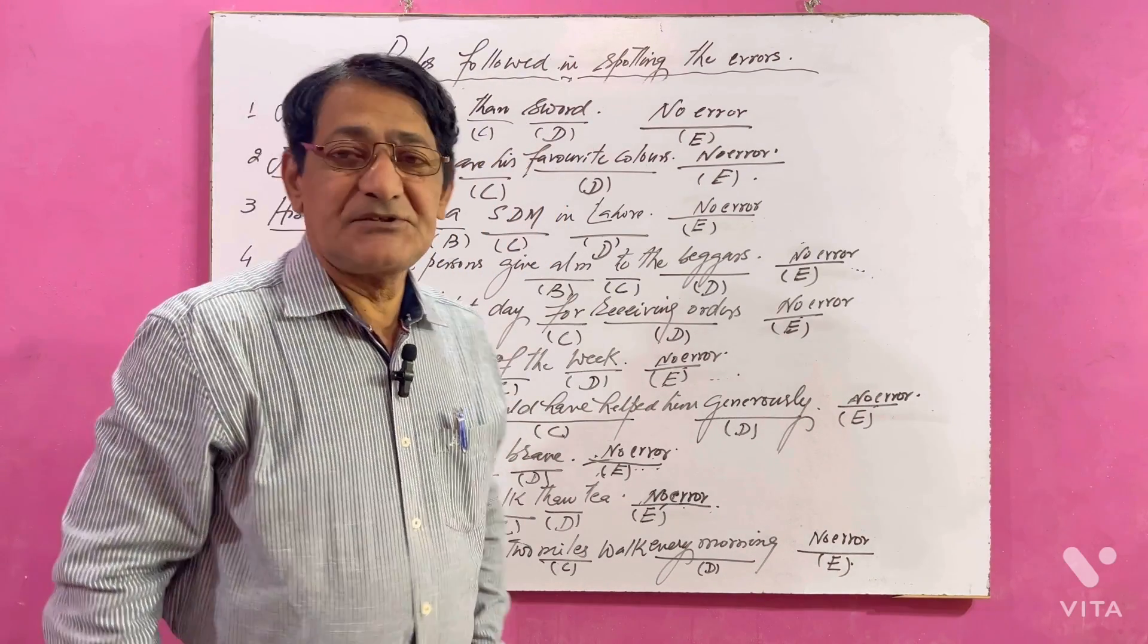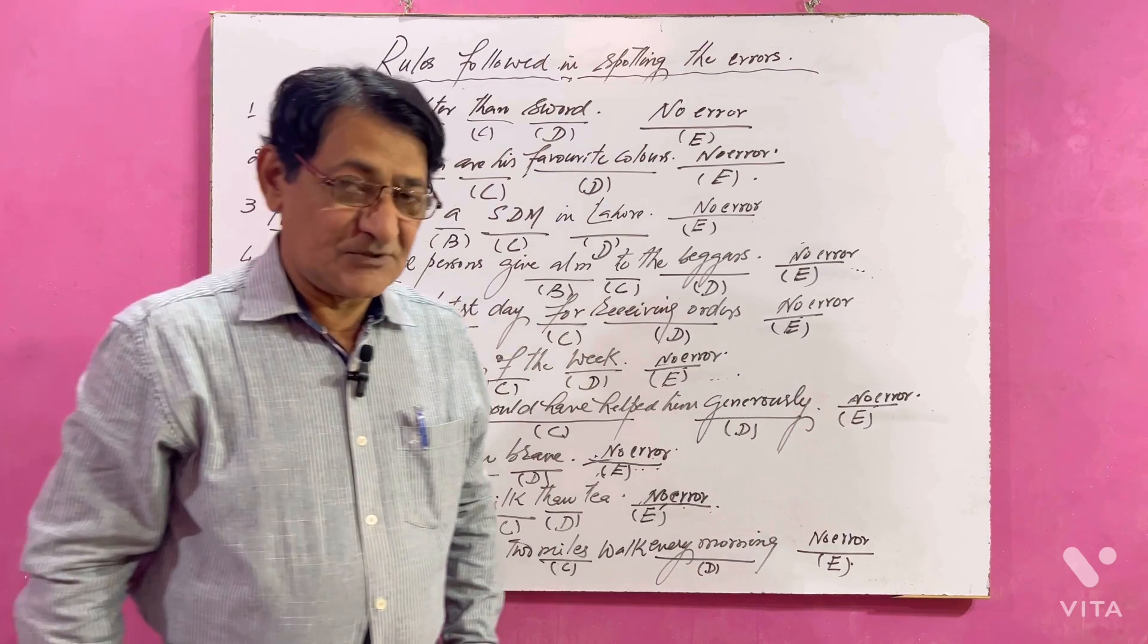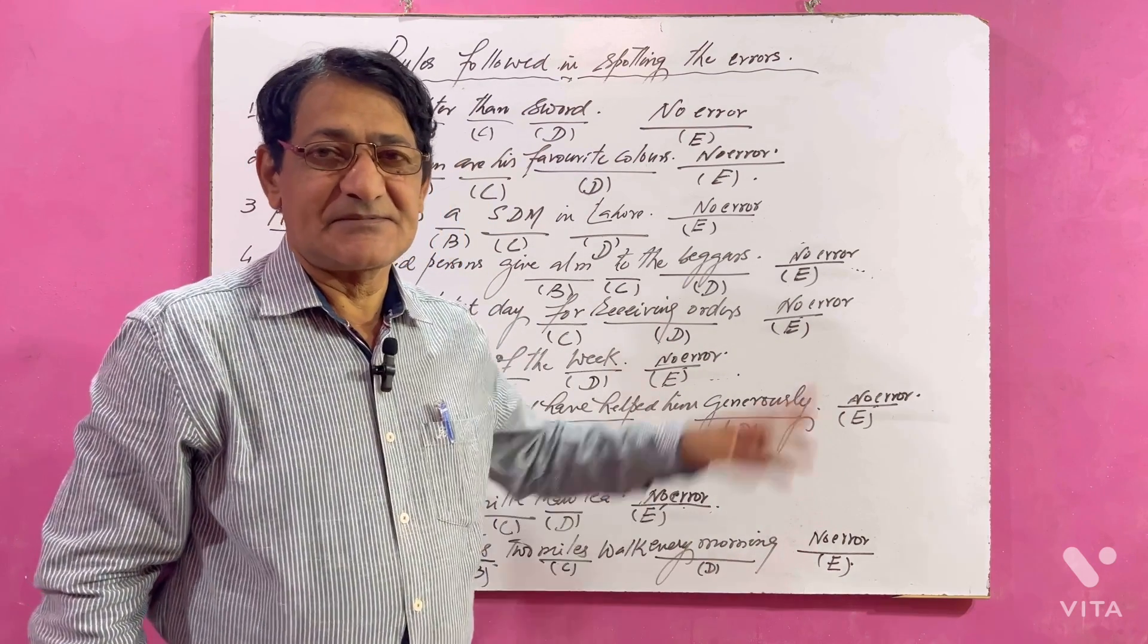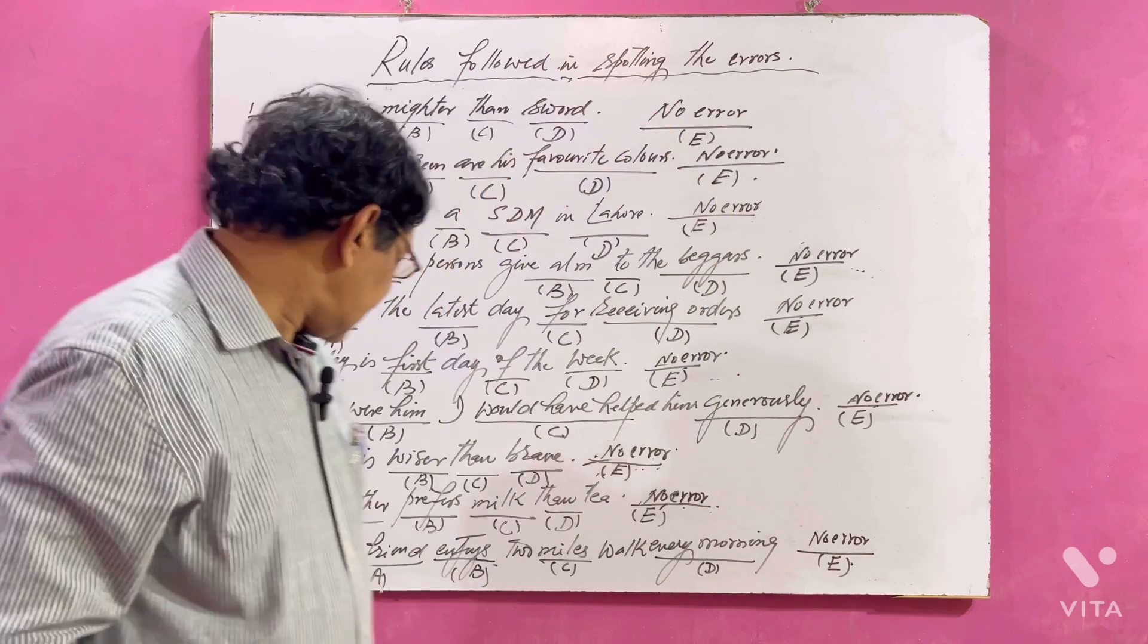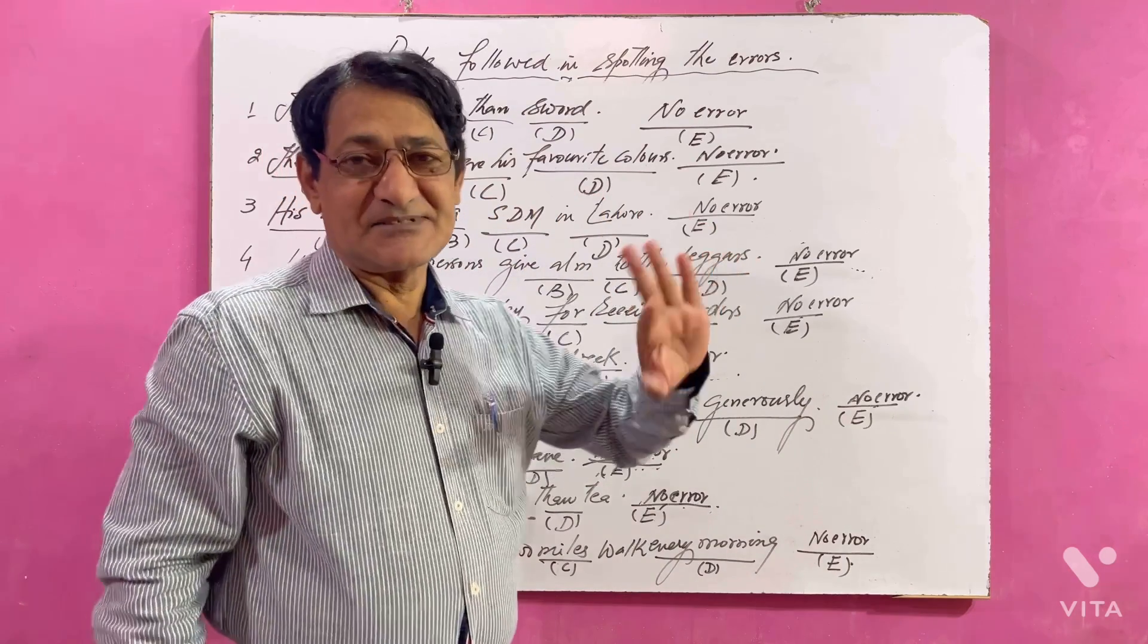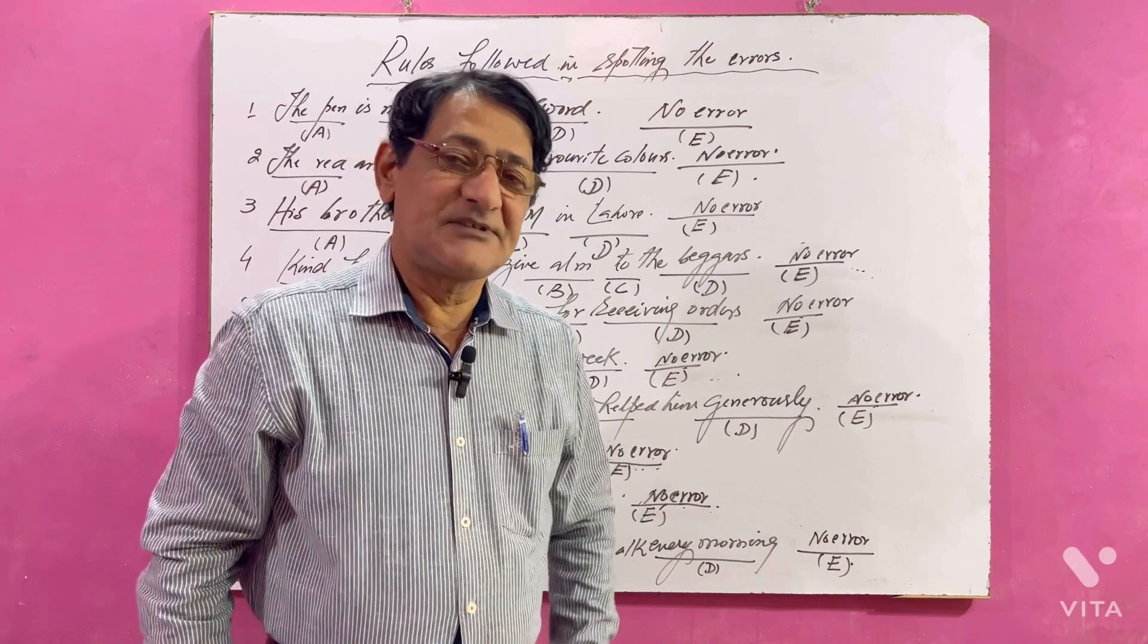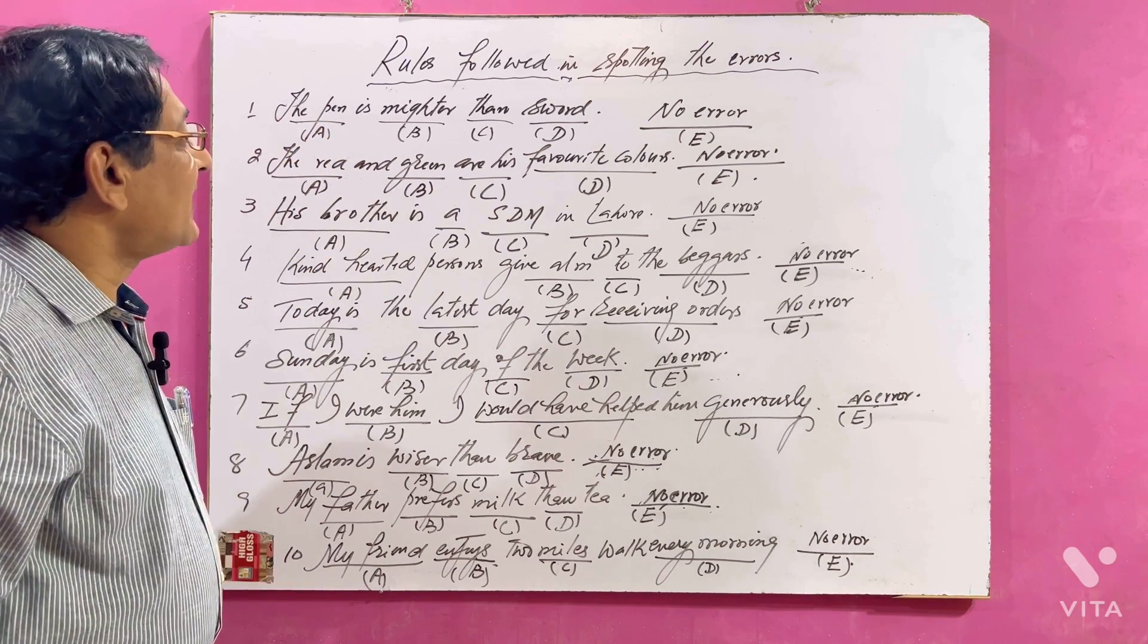In a previous video I taught you about some golden rules to be followed by students who want to attempt these types of tests, especially spotting the error. But here I have brought 10 sentences. In all these sentences there are some mistakes. We have to find out that mistake.